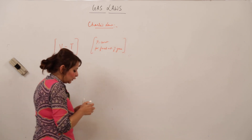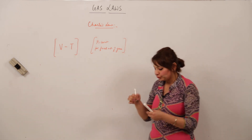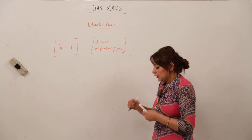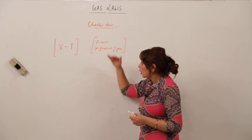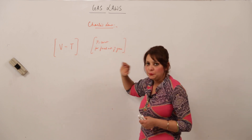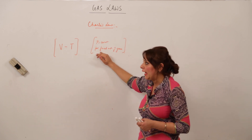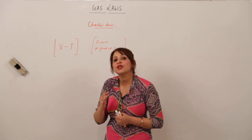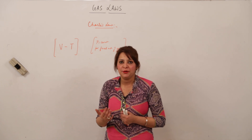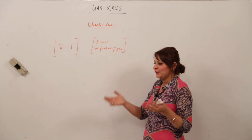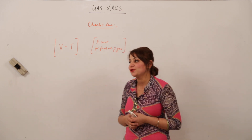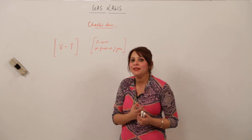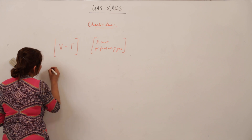Charles' law states that at constant pressure for a fixed amount of gas, the volume of the gas increases or decreases by 1/273 of its original volume at 0 degrees Celsius for every one degree rise or fall in temperature. I'll first give the statement and then explain it mathematically so you understand it more deeply.